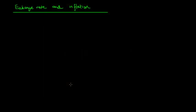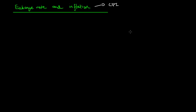Hey guys, we're going to talk about how the exchange rate can affect inflation. Inflation is measured by what is known as the Consumer Price Index, or the CPI, and this is the most common measure of inflation available to us. It is also measured by the Producer Price Index, or the PPI, but we're not going to worry about that for this lecture — we're just going to focus on the CPI.